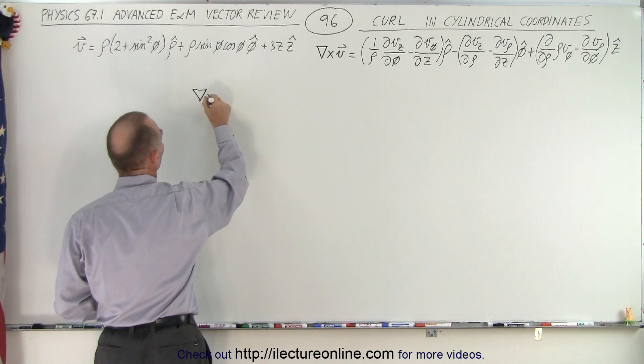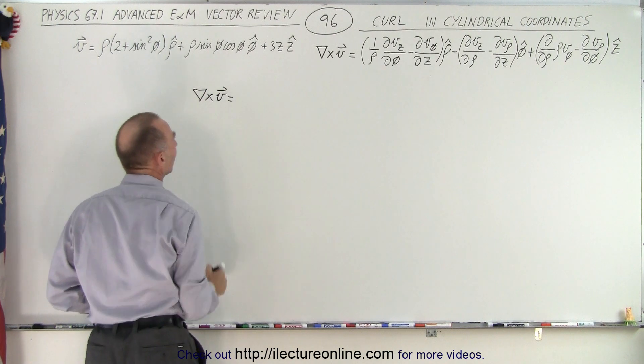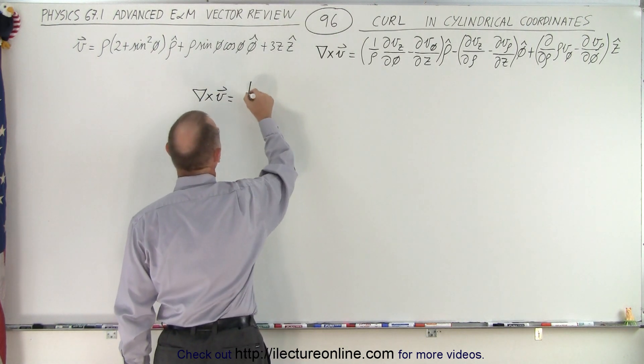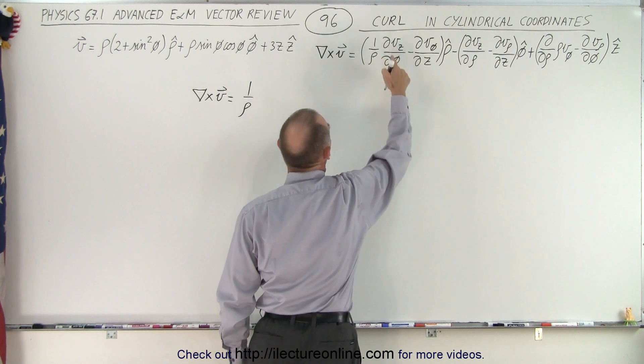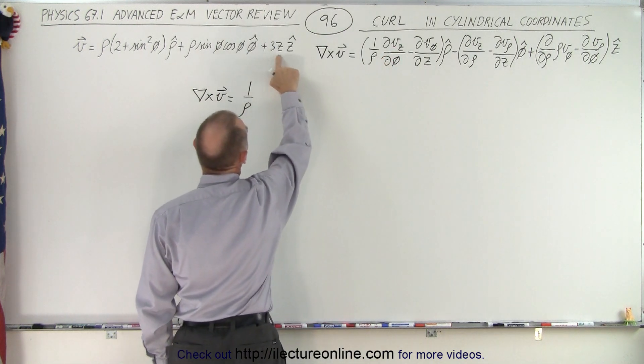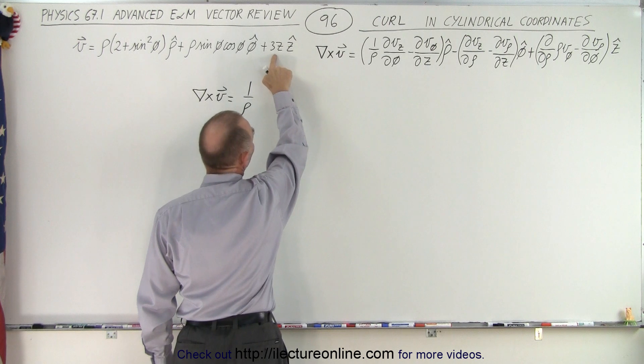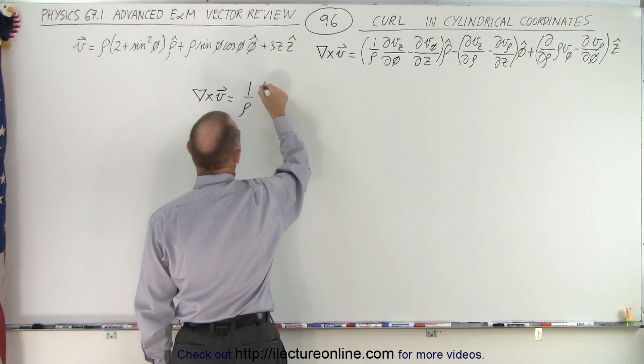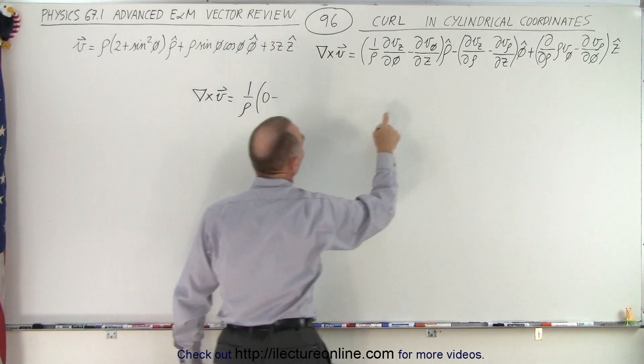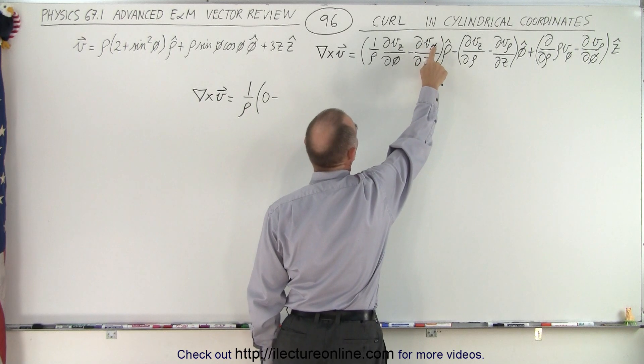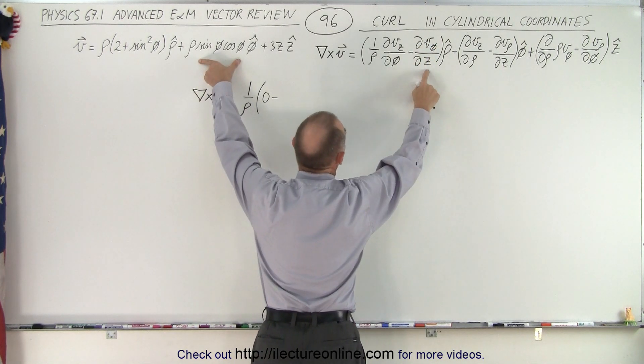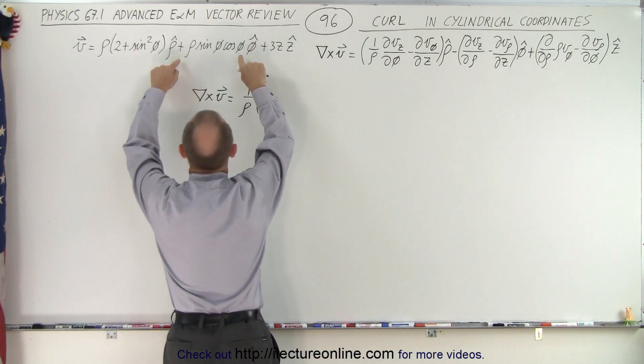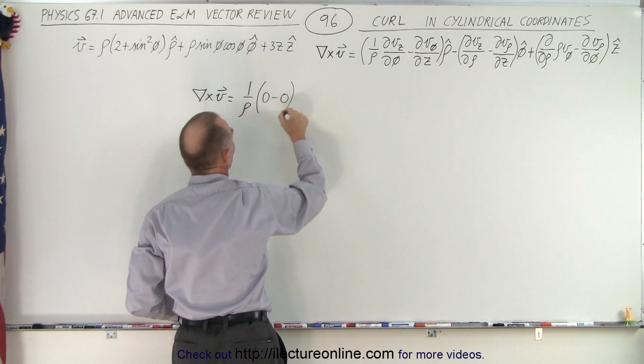So here we're going to take the curl of the vector function. And the first thing we do is we get one over rho times the partial derivative of the z component with respect to phi. So we notice that the z component has no phi in there, that's just a constant. And so that becomes zero minus the partial derivative of the phi portion of the phi component with respect to z. Notice there's no z in here, so that makes it zero as well.